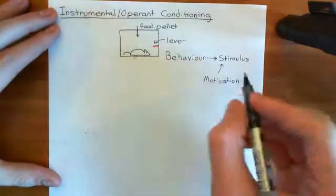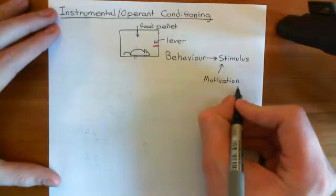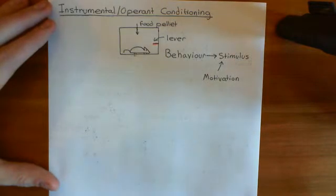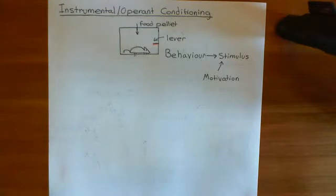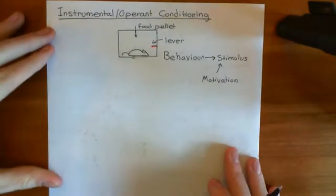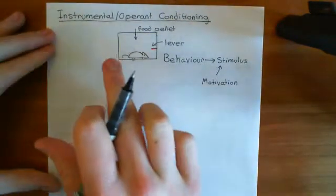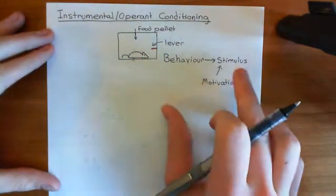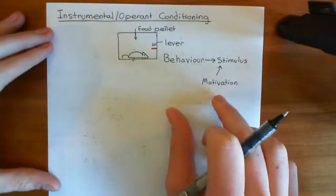Once the rat is full, then the motivation leaves it and it will stop the behavior. It won't just continue pressing the lever once it's full. So once the motivation has gone, this behavior stops being expressed — because it was only being expressed to saturate the motivation. Once the motivation's gone, the behavior won't be expressed anymore. So this is instrumental or operant conditioning: you can get a rat to perform some behavior for some stimulus that will saturate a motivational need.